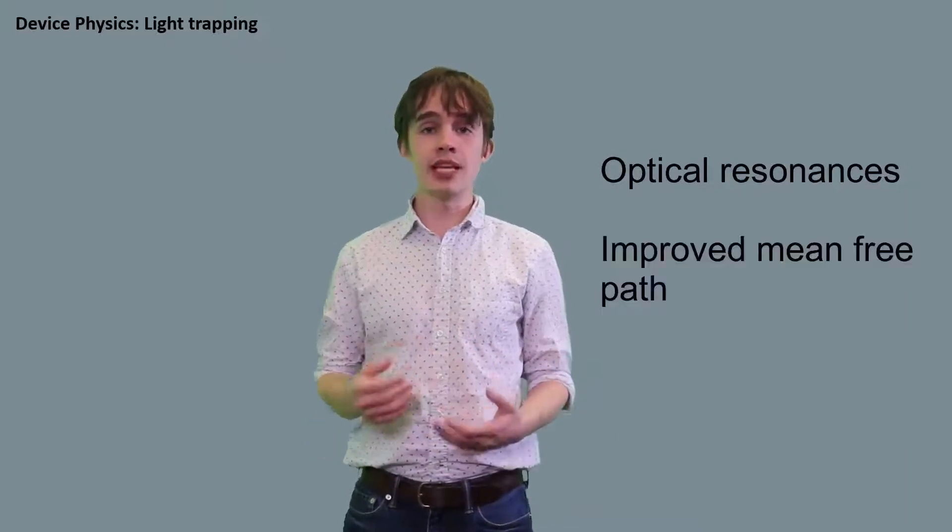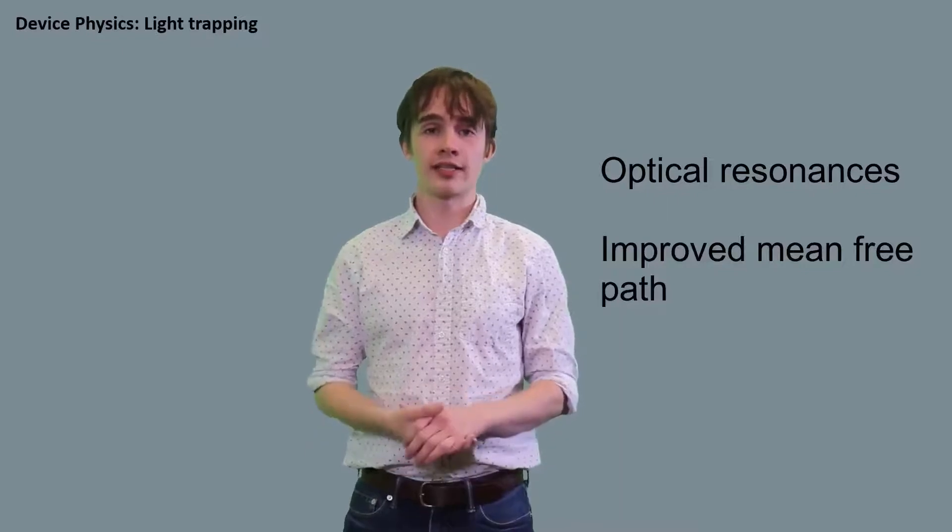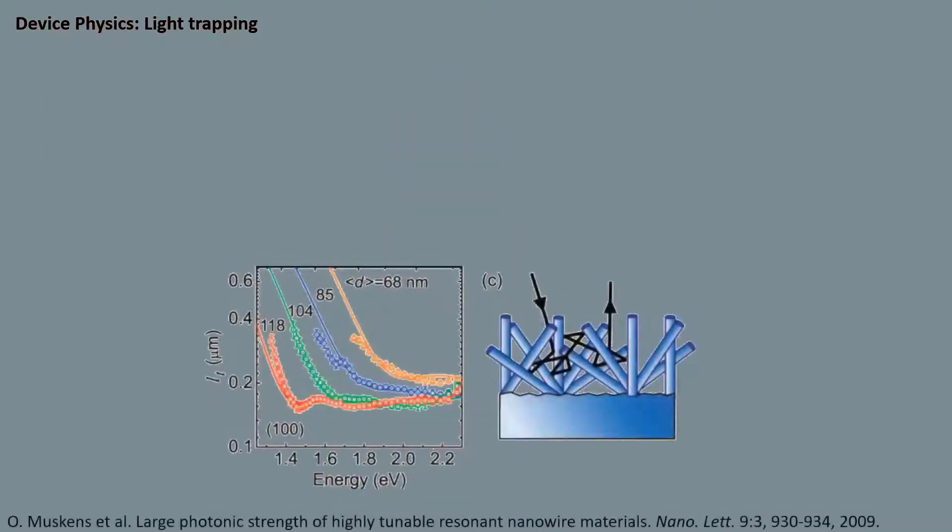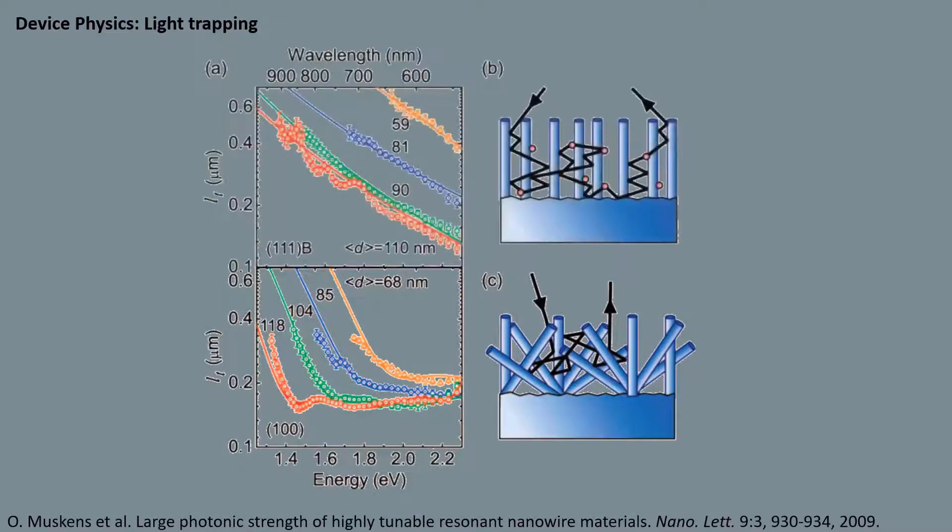Anti-reflection only accounts for part of the absorption improvement. Once the light has entered the device, light trapping effects are used to maximize the absorption efficiency. This comes down to two effects. Optical resonances of the nanowires, and an increase in the mean free path of a photon before it can exit the device. The nanowire diameter can have a big impact on the resonances available, but the biggest effect comes from the nanowire orientations. Randomly oriented arrays present a good Lambertian surface, but ordered vertical arrays can actually increase the mean free path considerably. This means that instead of transmitting out of the material, a given photon will undergo lots of scattering events, making absorption more likely.